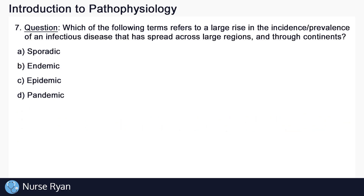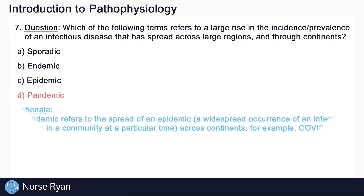And question number seven: which of the following terms refers to a large rise in the incidence or prevalence of an infectious disease that has spread across large regions and through continents? This one is D, pandemic. A pandemic refers to the spread of an epidemic — a widespread occurrence of an infectious disease in a community at a particular time — across continents. For example, COVID-19.